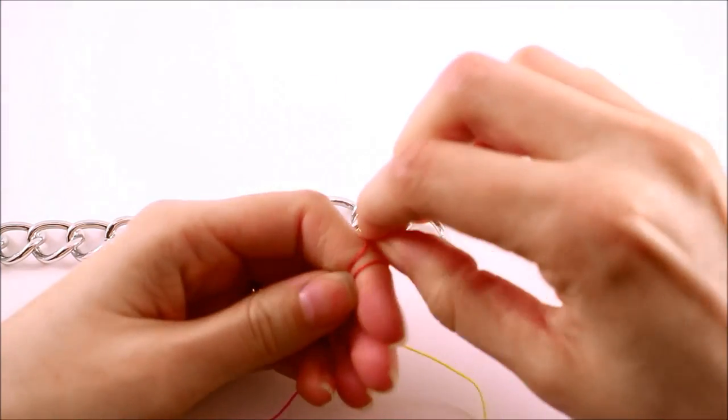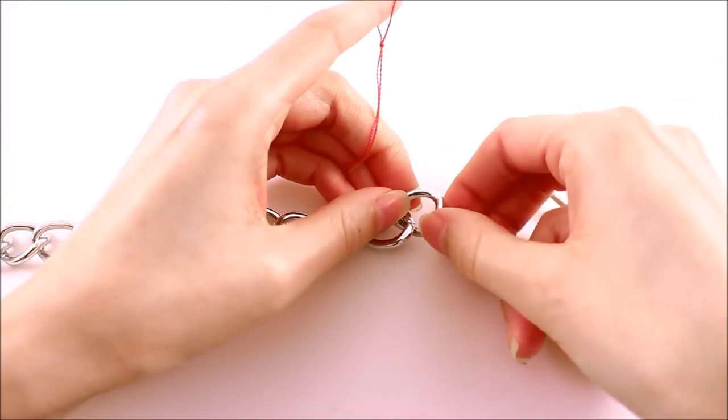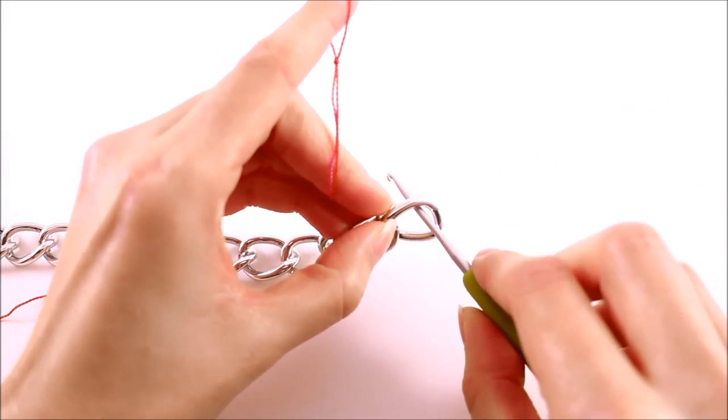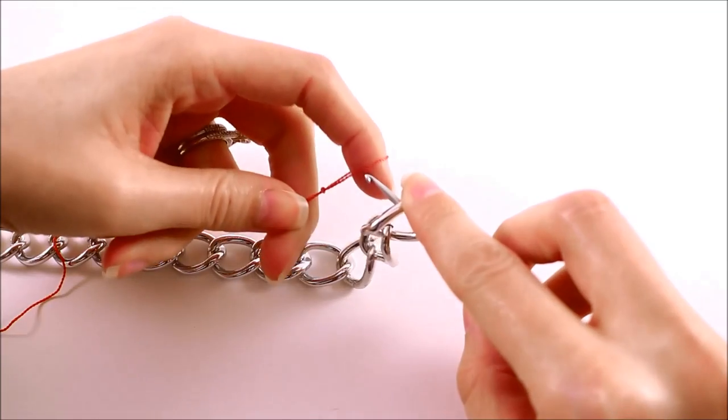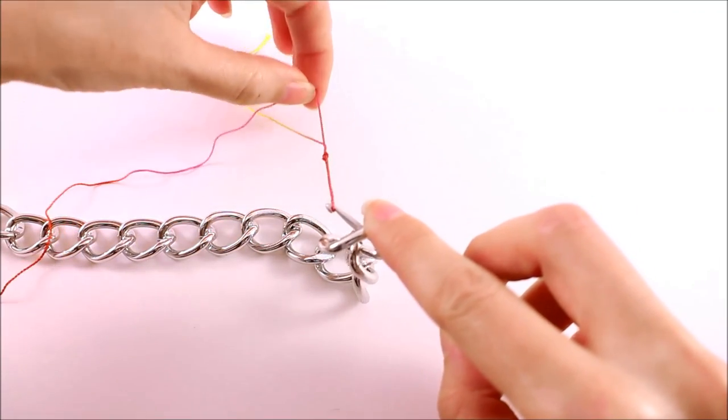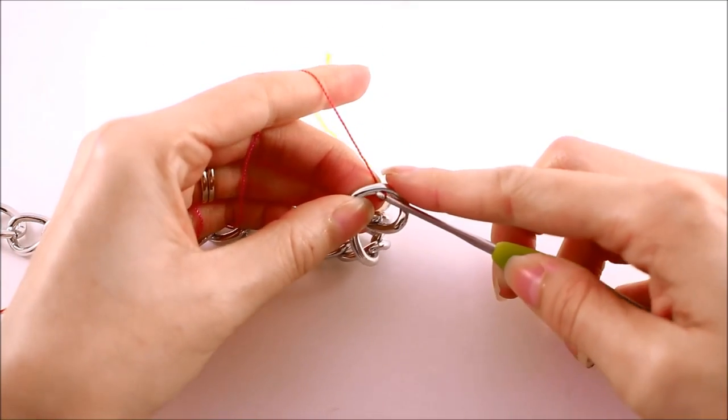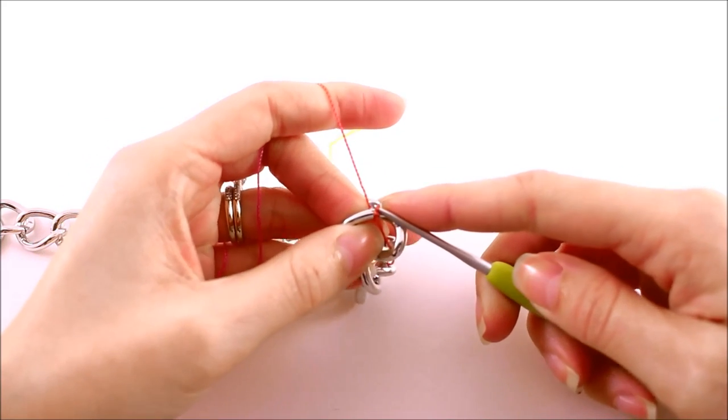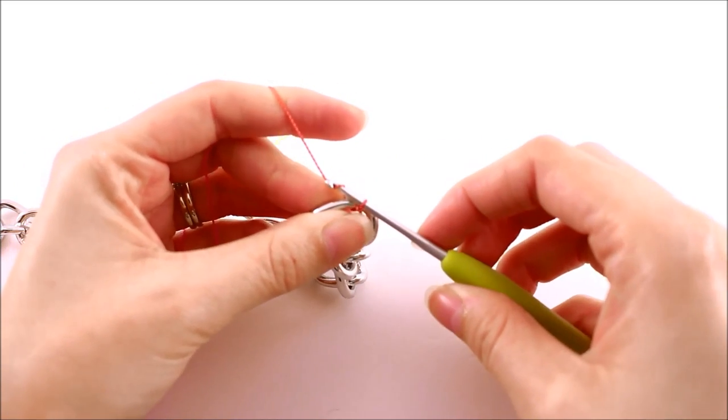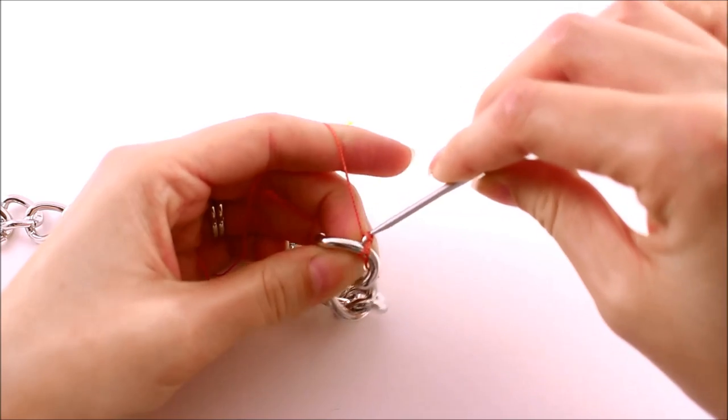Make a slip knot and then grab the first chain and insert your hook into the chain and place the slip knot on your hook and pull that tight. And then just bring the hook back through the other side of the chain. Then you'll make a chain one. So just grab that working yarn and pull through the loop on your hook.